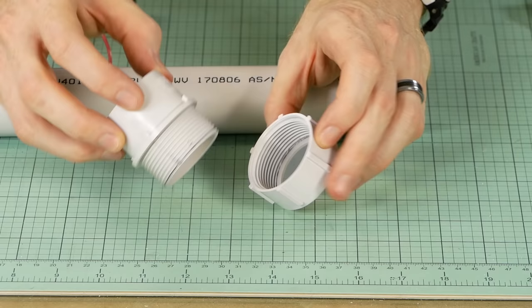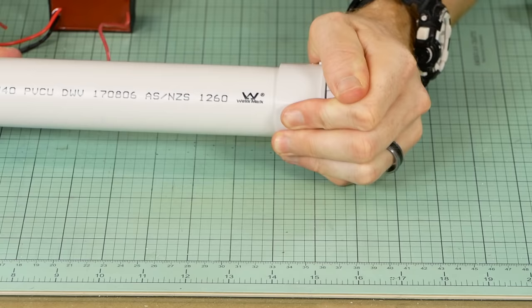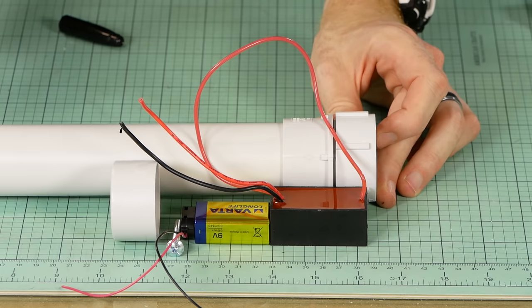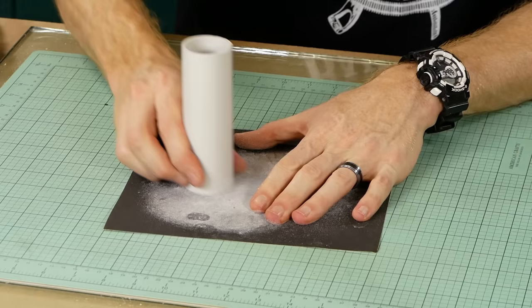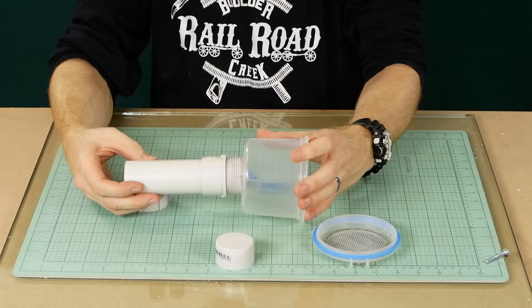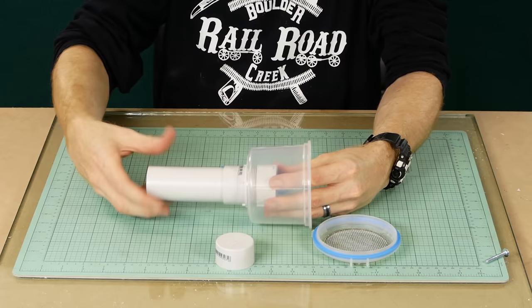To gauge the length of pipe I'll need for the handle, I lay the components out in the position they'll be once inside the tube. Now it's just a matter of marking the pipe and cutting it to length. You can cut the pipe longer if desired, however having a short handle allows the applicator to be used in confined spaces. Now that everything is being cut and glued, I'll give it a test fit to make sure it all fits together before installing the electronic components.